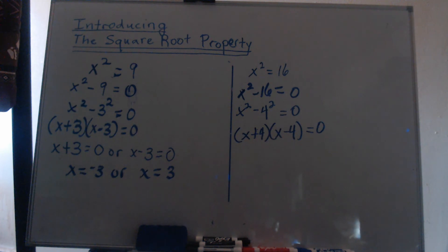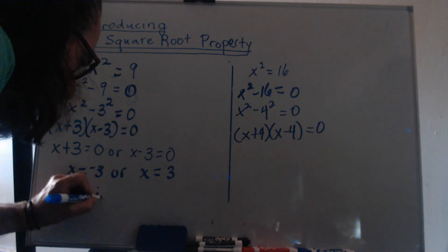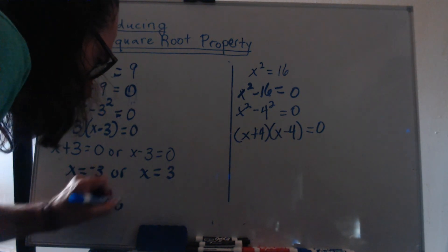Remember that since these are the same size, but different signs, we can abbreviate that as x equaling plus or minus 3.